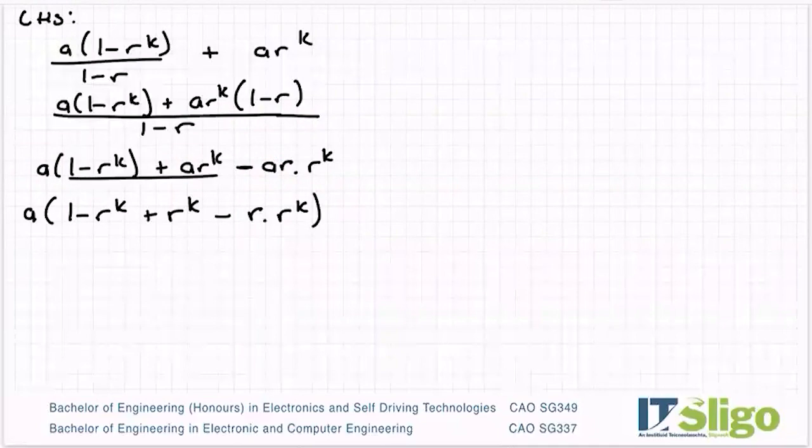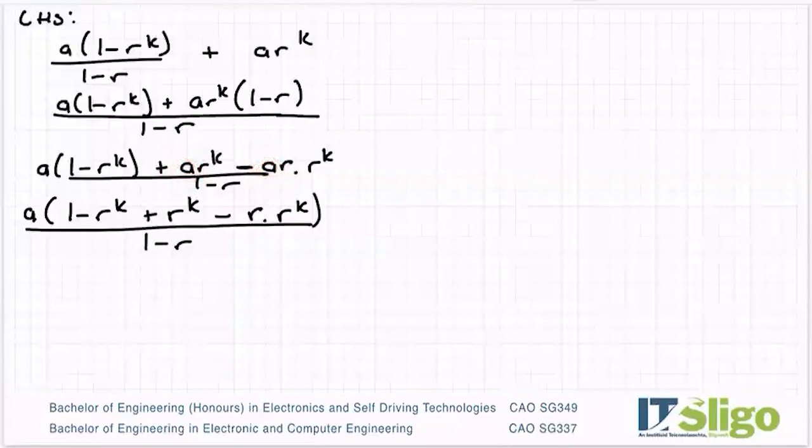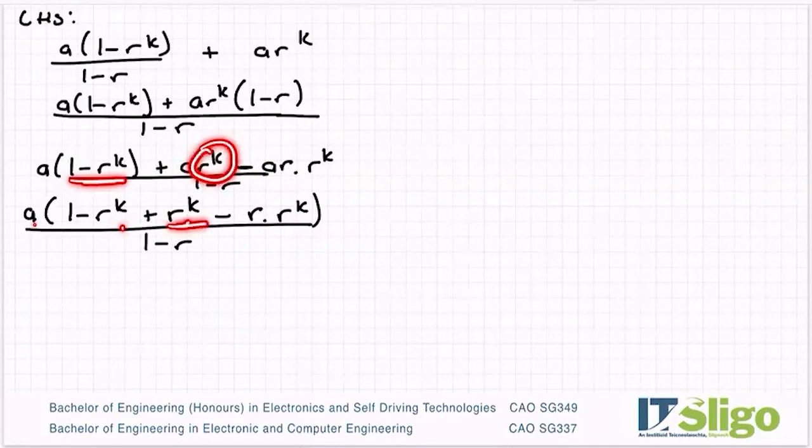Plus r to the power of k minus r by r to the power of k. So I hope it didn't lose anybody there. The a was factored out here, so I just factored it out of these two terms as well. And I'm left with 1 minus r to the power of k plus the r to the power of k minus r by r to the power of k.